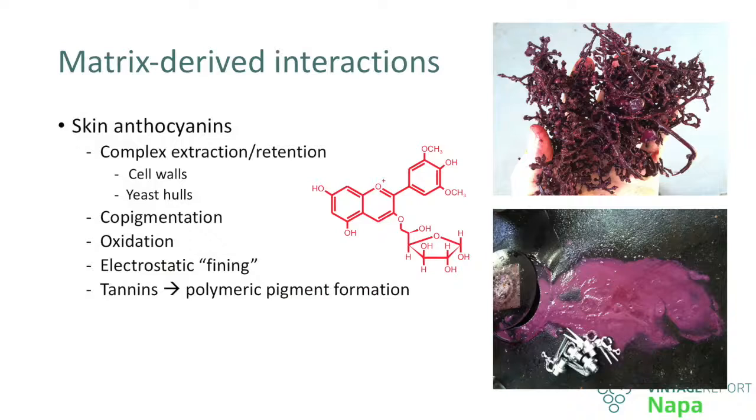A few interactions pertaining to the matrix itself. Particularly pertaining to anthocyanins — they are extremely, extremely reactive once extracted. However, they are much more predictable than tannins. Once extracted, they start reacting with cell walls, they start reacting with yeast. They undergo non-covalent reactions — you have heard about copigmentation, oxidation — and something we have been looking at is what I call electrostatic fining. Anthocyanins, for instance malvidin-3-glucoside, are positively charged. The bad news is that all the fermentation solids tend to be negatively charged. So when you put together malvidin-3-glucoside — positively charged — and fermentation solids such as stems or leaves, they essentially attach to them and you find them out of solution.